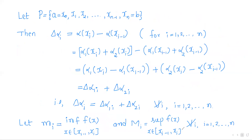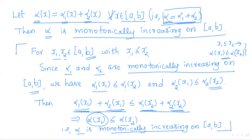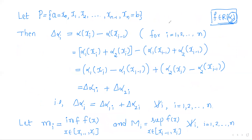For this monotonically increasing function α, we shall verify the Riemann-Stieltjes integrability of f. We have the partition P which is the common refinement of P₁ and P₂, so it contains finitely many points from a to b. Take those points as x₀, x₁, x₂, ..., xₙ. To define the lower and upper Riemann-Stieltjes sums we need Δαᵢ.